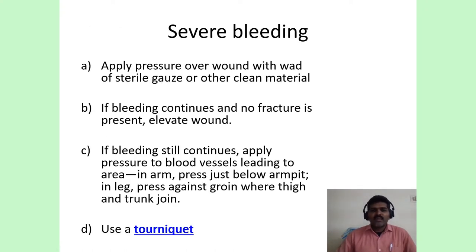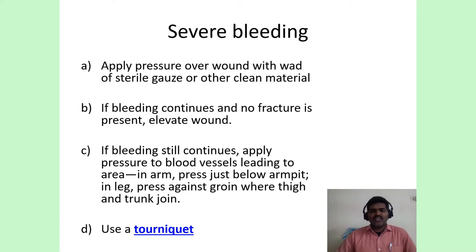For severe bleeding, apply pressure over the wound with a pad of sterile gauze or other clean material. If bleeding continues after pressure is applied and no fracture is present, elevate the wound. If bleeding still continues, apply pressure to the blood vessels leading to the area — in the arm, press just below the armpit; in the legs, press against the groin where the thigh and trunk join. Use a tourniquet if bleeding continues even after pressure is applied.